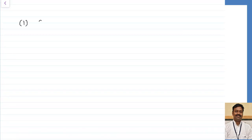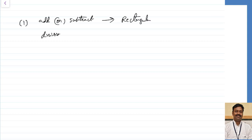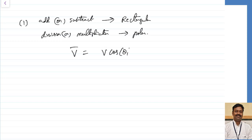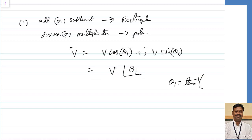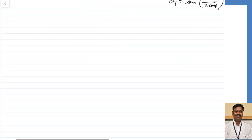The major conclusion: whenever you want to do addition or subtraction, use the rectangular coordinate system. For multiplication or division, use the polar coordinate system. In rectangular form, vector V equals magnitude into cos(angle) plus j times magnitude into sin(angle). In polar form, V equals magnitude at angle theta1, where theta1 equals tan inverse of y-component divided by x-component.